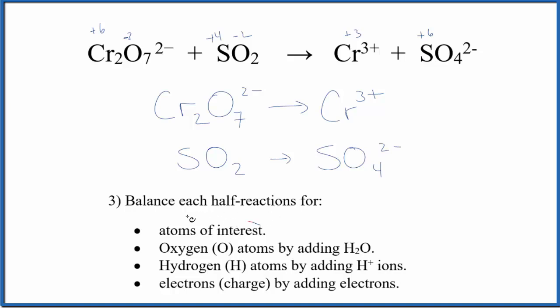First we need to balance each of these half reactions for the atom of interest, the one that changed. So I have two chromiums here, I need to put a two here. That's balanced. Sulfur, sulfur, that's good. Now we can add H2O to both sides that'll balance the oxygen atom. Here I have seven oxygen atoms, so I need to add seven water molecules. Down here I need to add two water molecules, and then that will give me two plus two is four, we have four oxygens here.